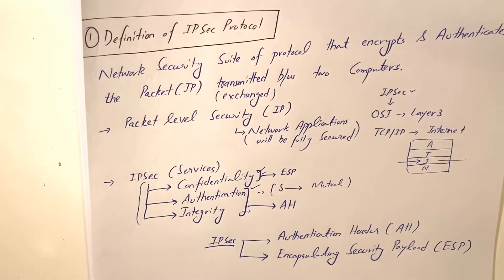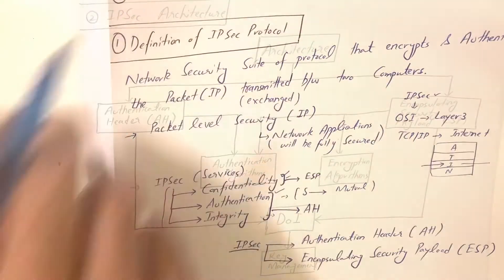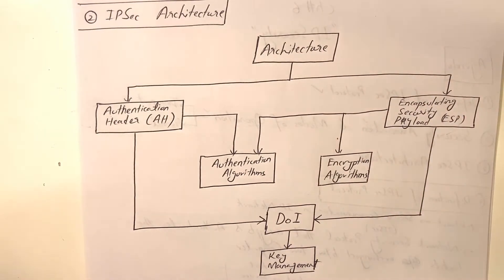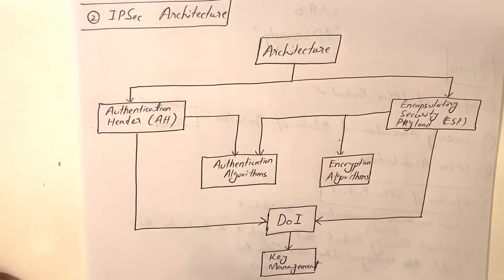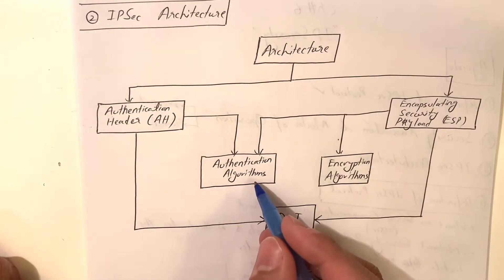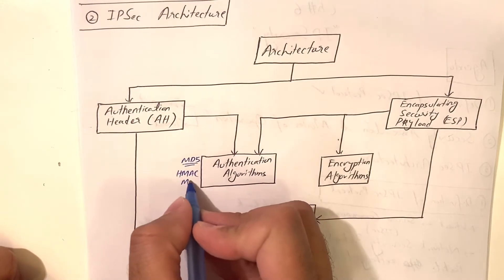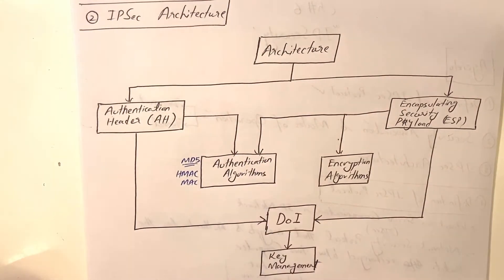Let me give you an overview of the architecture of IPsec. This architecture has two main protocols: Authentication Header, which provides authentication of the packet and integrity of the packet; and ESP, which provides confidentiality using encryption algorithms — you can use symmetric or asymmetric encryption. Authentication algorithms include MD5, cipher text-based authentication, HMAC, and message authentication codes.